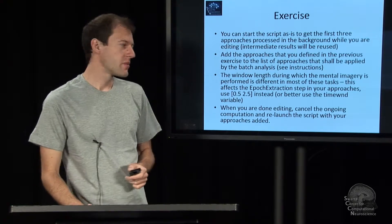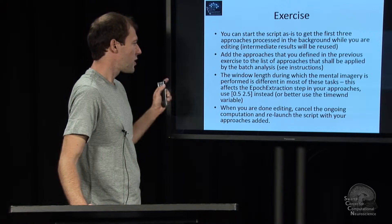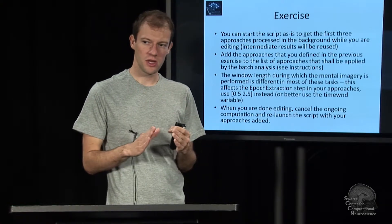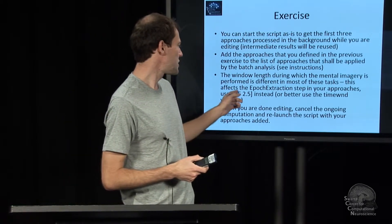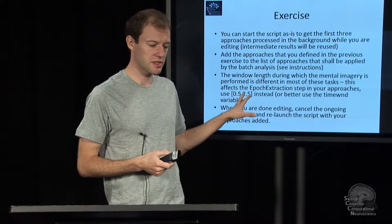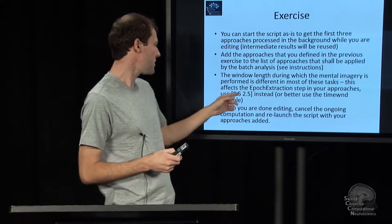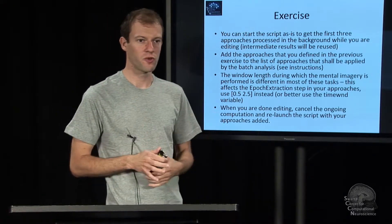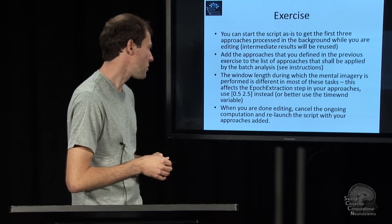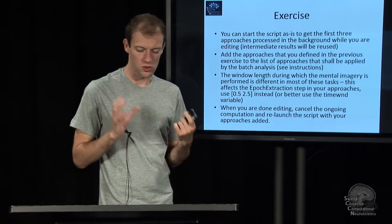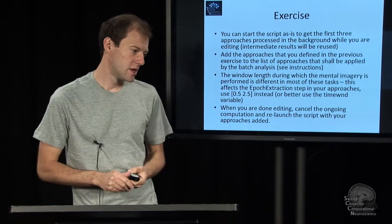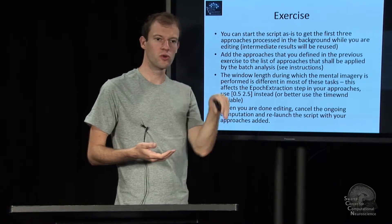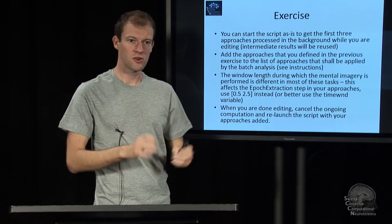And there's one more thing. What you will probably have to do is you will have to override the length of the epochs in your approach because there are some subtasks in this data set where people had very short imagination periods, just half a second until 2.5 seconds after the instruction as opposed to 3 to 4. And so to make this work properly, you have to override this for the approaches that you want to use. And so to find this parameter, you might use the guidance that I gave in this one lecture where you go through the GUI and find where it is and extend your approach definition.